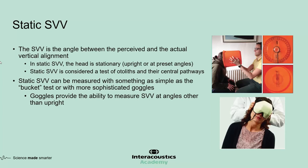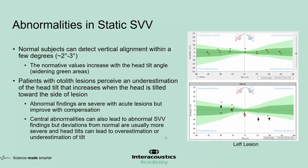Static SVV can be measured with something as simple as the bucket test or with more sophisticated goggles. These goggles allow you to measure SVV at angles other than the head upright position, which definitely increases the sensitivity of the test. Static SVV is considered a test of the otoliths and their central pathways.